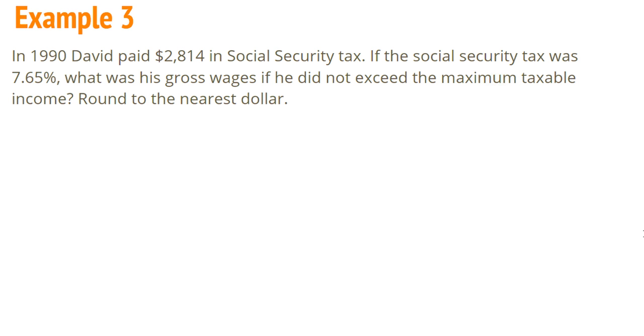All right, so let's take a look at example three. In 1990, David paid $2,814 in social security tax. If the social security tax was 7.65%, what was his gross wages if he did not exceed the maximum taxable income? Round to the nearest dollar.